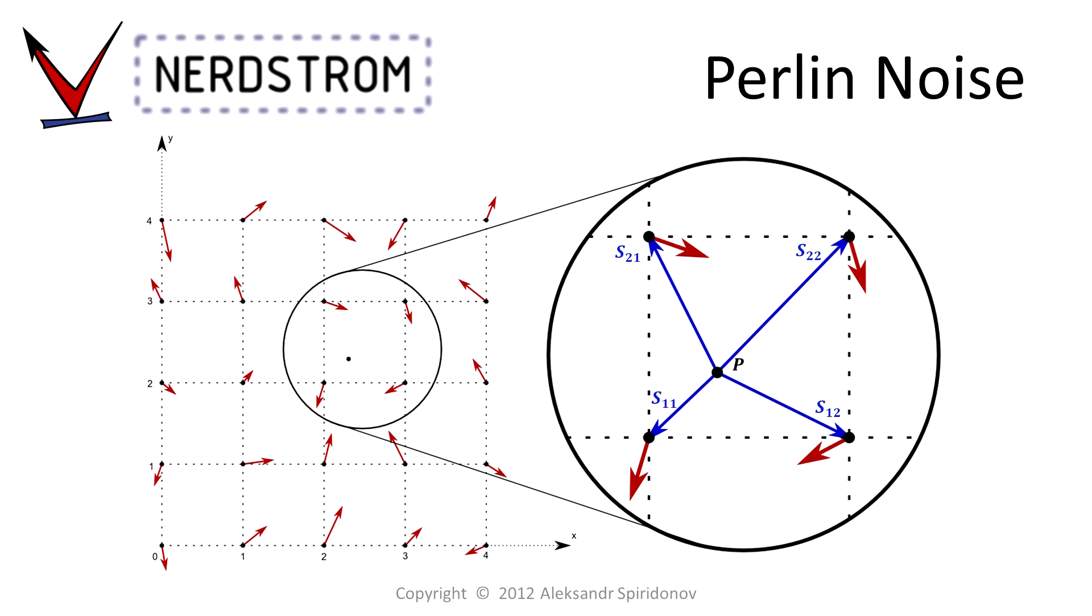Next, we take the dot or inner product of the displacement vectors S with their respective gradient vectors G to obtain the 4 gradient values at our sample point, named q11 through q22 in the illustration.